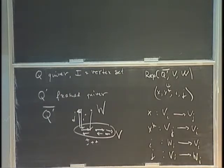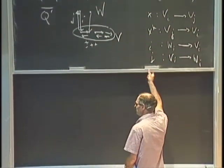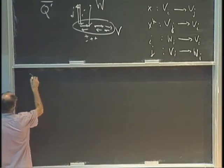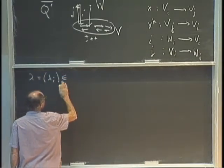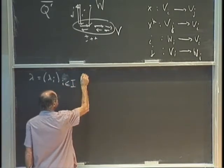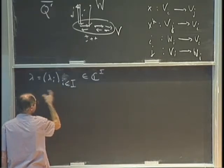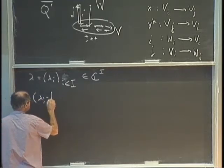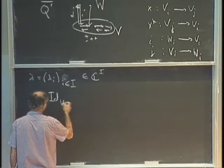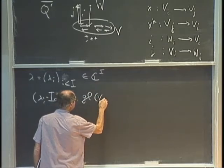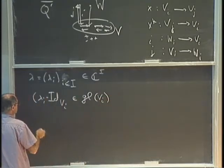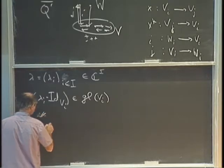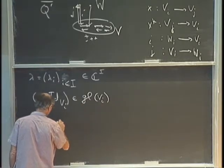To define the Nakajima quiver variety, we need to specify a parameter lambda, which is an I-tuple of complex numbers, so a point in C to the I. Associated with this point, we have a collection of scalar matrices: lambda_I times the identity on V_i, which lives in GL(V_i). All together for all i's, this gives me a point lambda in the direct sum of these, denoted G sub V.